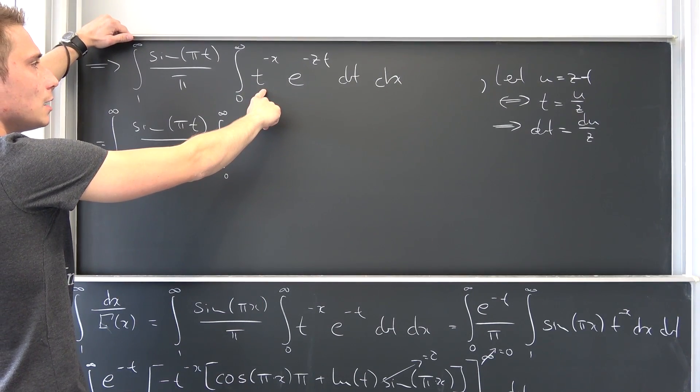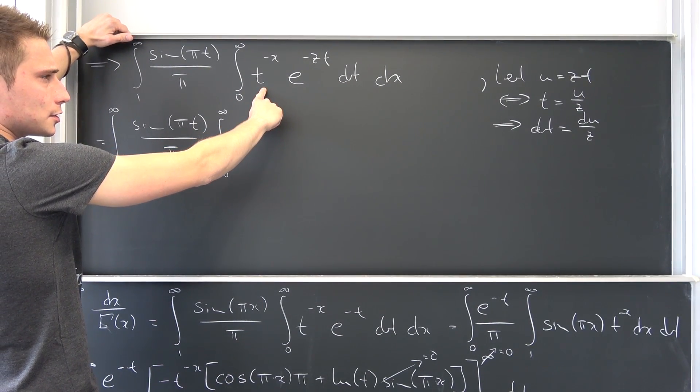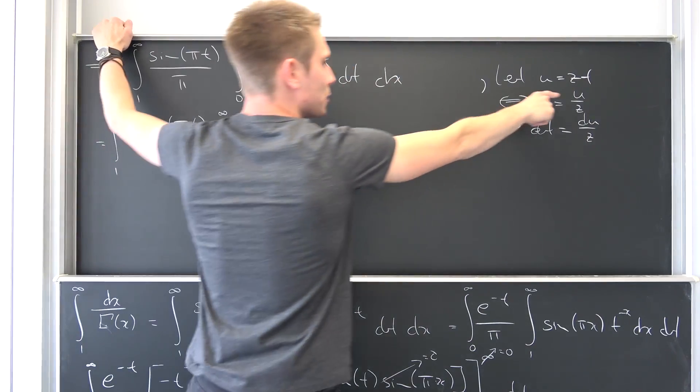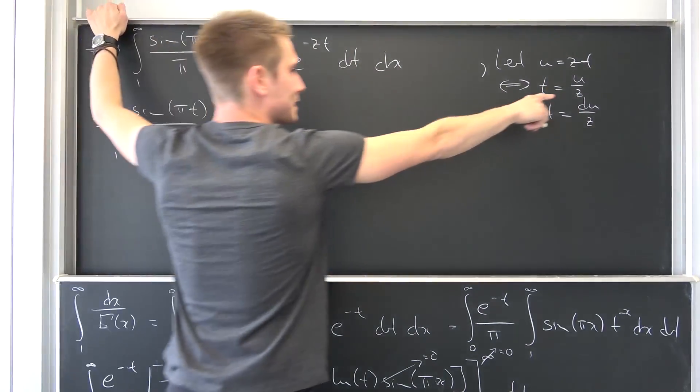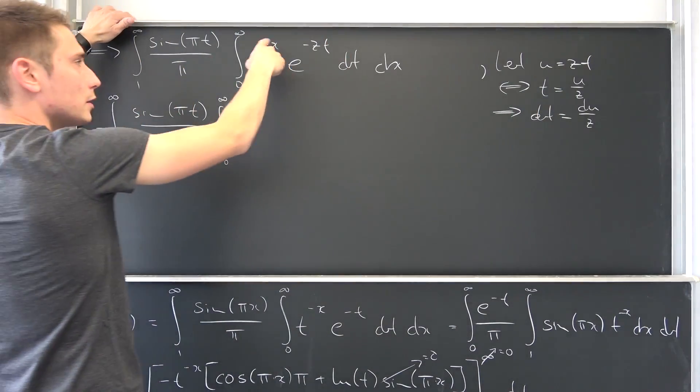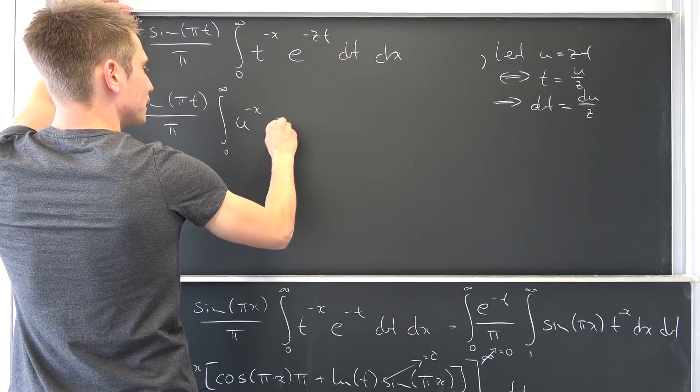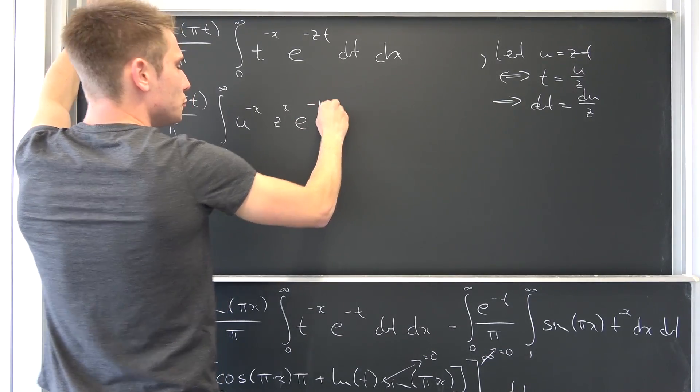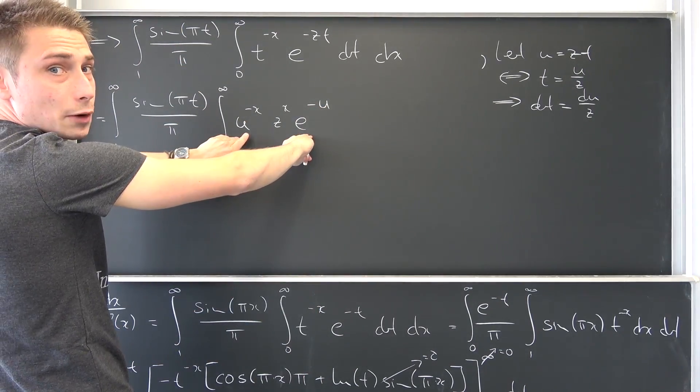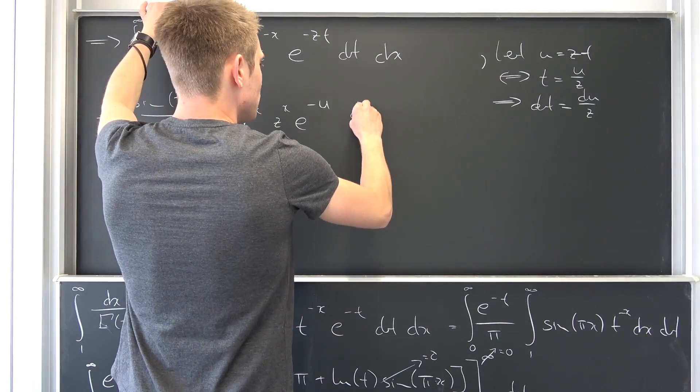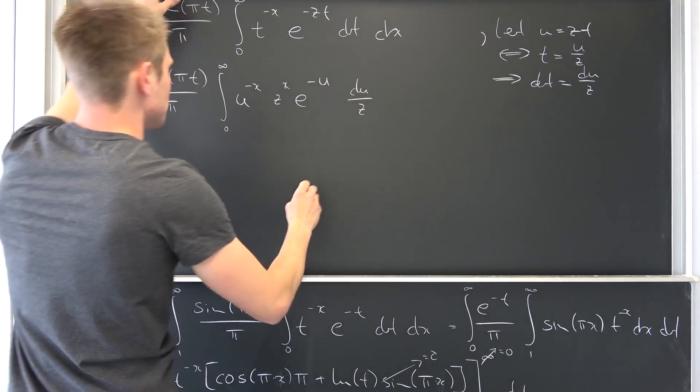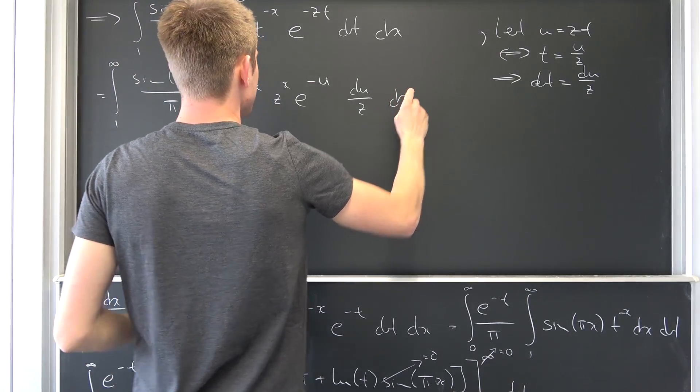Now we are going to get u to the negative x power, then z to the x power. It's the reciprocal of z. e to the negative u in this case. This is going to give us our gamma function of one minus x once again, and then the u over z. Integrate it with respect to x in this case.